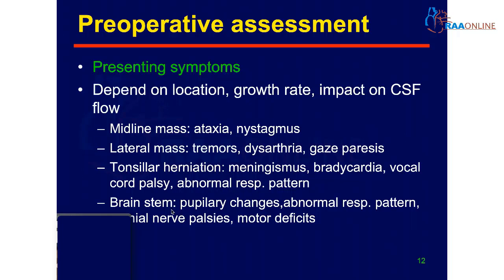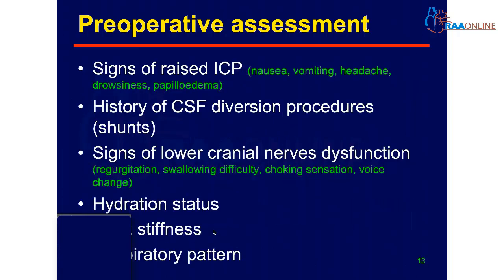If the brainstem is involved, patients can have pupillary changes, abnormal respiratory pattern, cranial nerve palsy and motor deficits. In the assessment, one should look for signs of raised intracranial pressure like nausea, vomiting, headache, drowsiness and papilledema; any history of CSF diversion procedures like ventriculoperitoneal shunt; signs of lower cranial nerve dysfunction like regurgitation, swallowing difficulty, choking sensation, and voice change; hydration status, as repeated episodes of nausea, vomiting or swallowing difficulty can lead to dehydration; and neck stiffness and respiratory pattern.